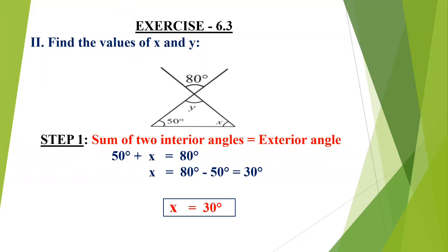Now using the same property, we are going to find the value of x and y. We are having two unknown values x and y, so we have to do it step by step. We have the angles 80 degrees and 50 degrees and two unknowns x and y. The first step is using the sum of two interior angles property: the sum of two interior angles is equal to the exterior angle. Remember that the interior angles chosen must be opposite to the exterior angle.